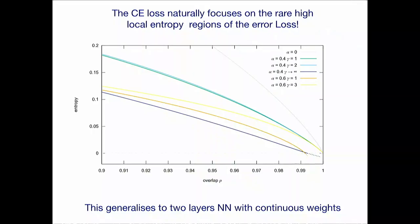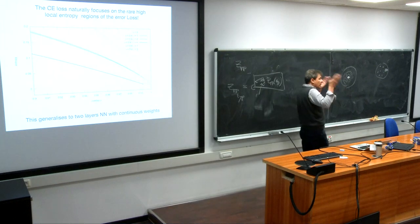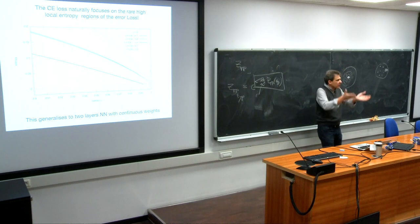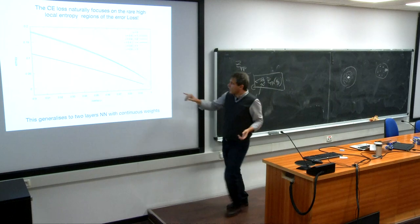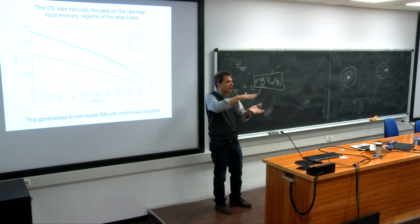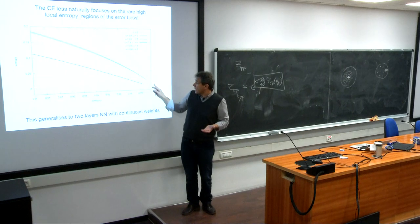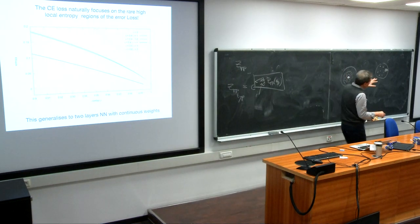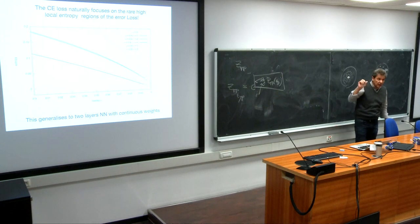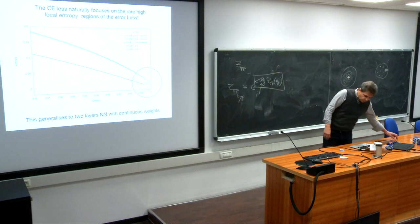This is the main result: when you minimize the cross entropy you end up in a region where the problem is easier to optimize, and around the typical point you find an exponential number of solutions for the original pure classifier — not for the cross entropy, which penalizes configurations that barely satisfy patterns close to the threshold. So cross entropy ground states are near but not exactly in the densest regions.